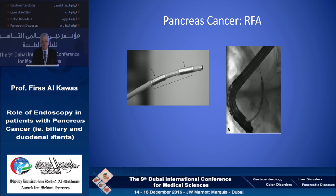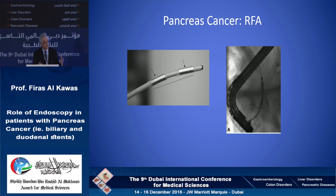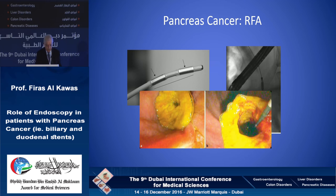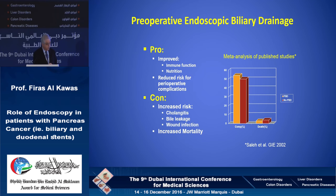Radiofrequency ablation is now commonly used in GI — for example, for esophageal high-grade dysplasia in Barrett's. We now have biliary catheters that allow us to introduce RFA via an ERCP scope into the biliary tree or pancreas. Data suggests RFA can improve stent patency when applied before a metal stent is placed, and recent data from Mass General shows RFA can be used to declog an occluded metal stent with good success rate and longer patency.